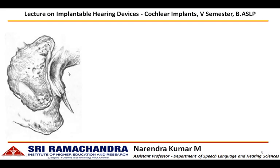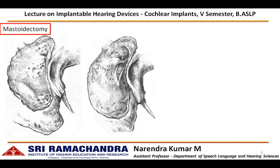After the cortical mastoid bone is exposed, the mastoidectomy is done where a part of the mastoid cavity is removed by drilling the bone. Once this is done, posterior tympanotomy is performed in order to approach the facial recess.